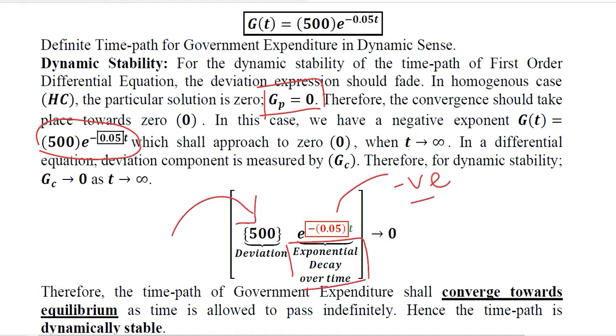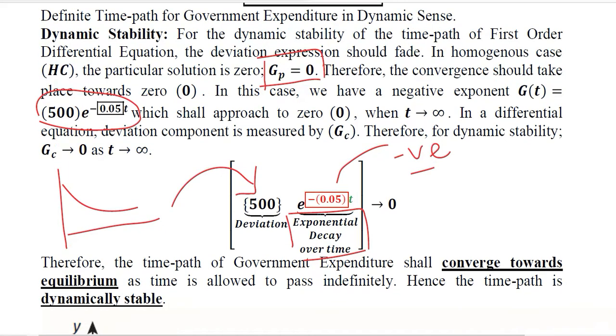The deviation is 500, which is a positive deviation. This also means we are likely to have the graph from above the equilibrium. So convergence is imminent. Convergence will take place. The dynamic stability will be there since the convergence is happening and the deviation is declining.